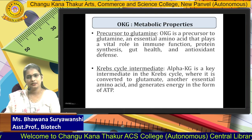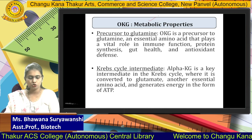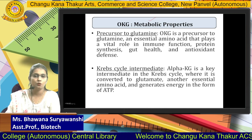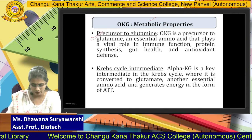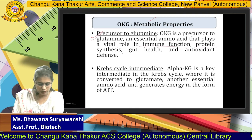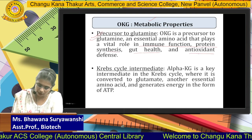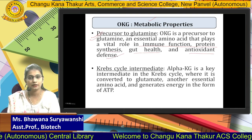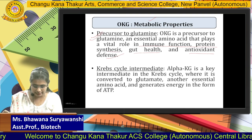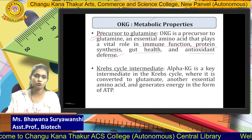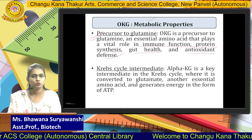As we have seen different properties in the previous video lecture, one property we are going to see today is metabolic properties. The first important metabolic property of OKG is that it is a precursor to the essential amino acid glutamine. So it is playing a vital role in immune function, protein synthesis, maintaining or restoring gut health, and it is also having an antioxidant defense mechanism. Antioxidant properties are very important in the immune system — it is not only working as an immunomodulator but also very important in preventing cancers.